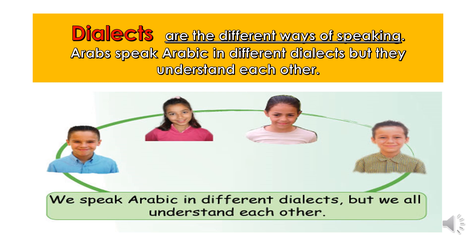So who can tell me what are dialects? Dialects are different ways of speaking. Although Arabs speak the same language — Arabic — they speak in different styles and ways. These are called dialects. Can you look at the kids in the picture? Let's see what they're saying: 'We speak Arabic in different dialects, but we all understand each other.' Because they're speaking in a common language, which is Arabic.